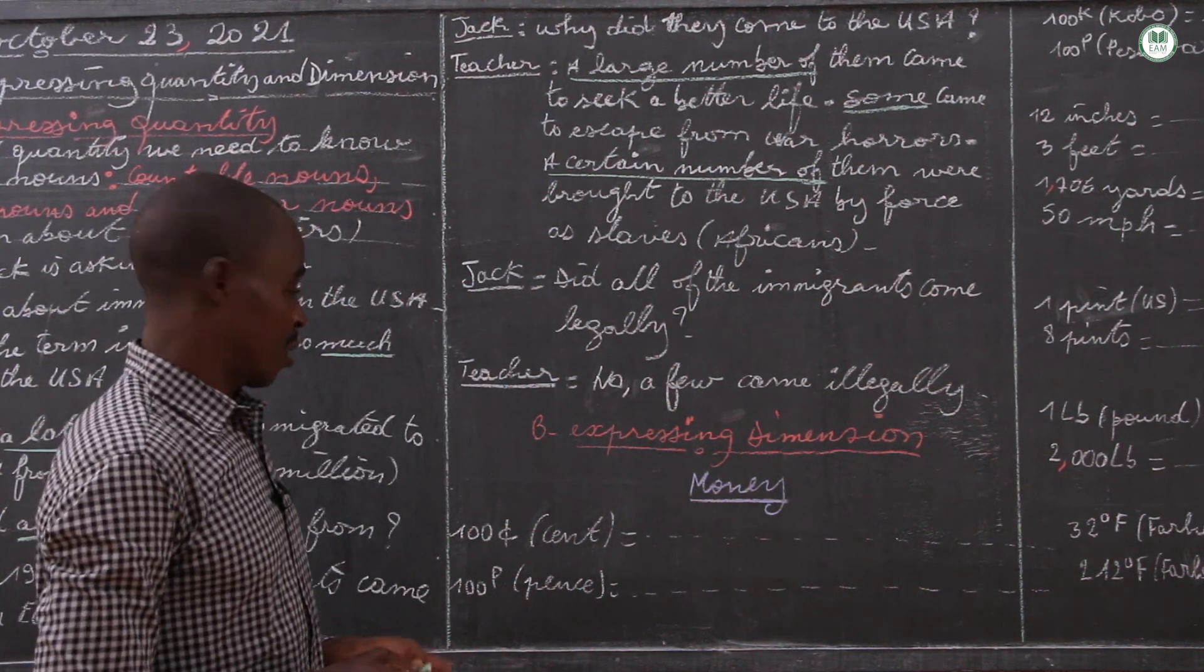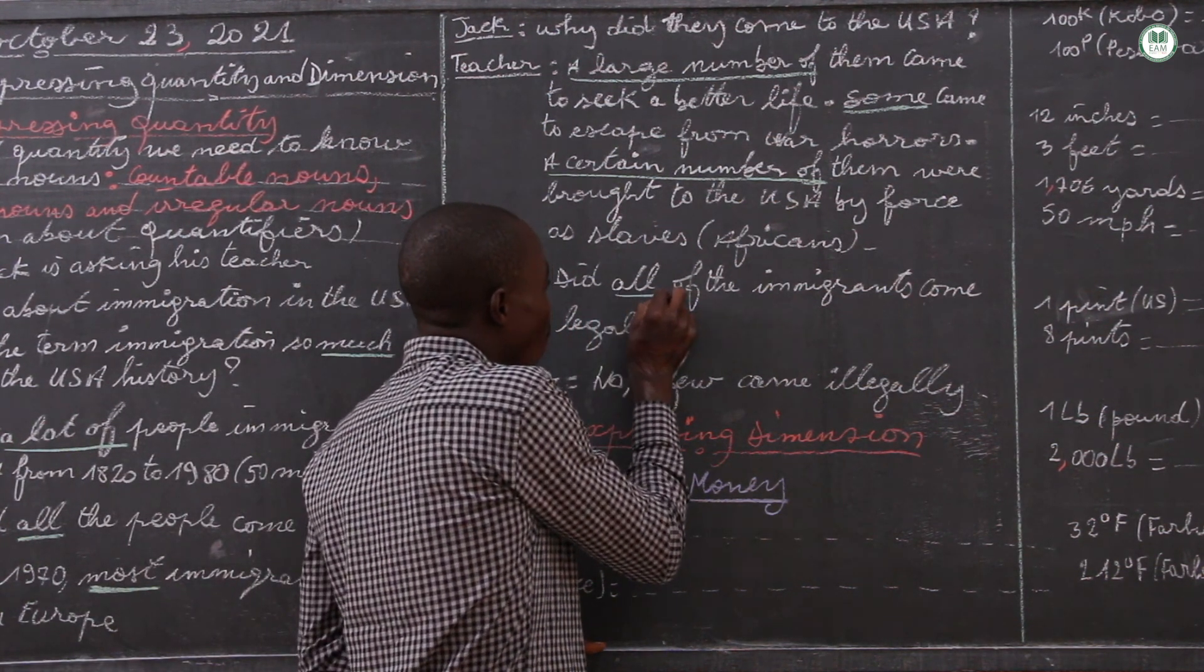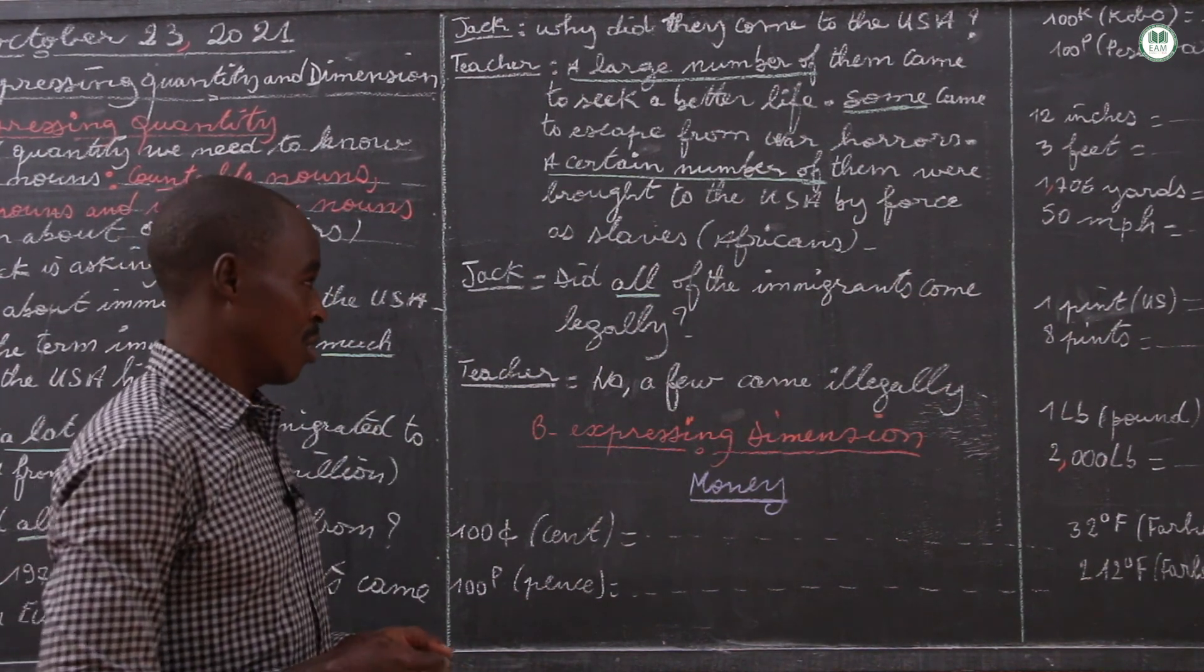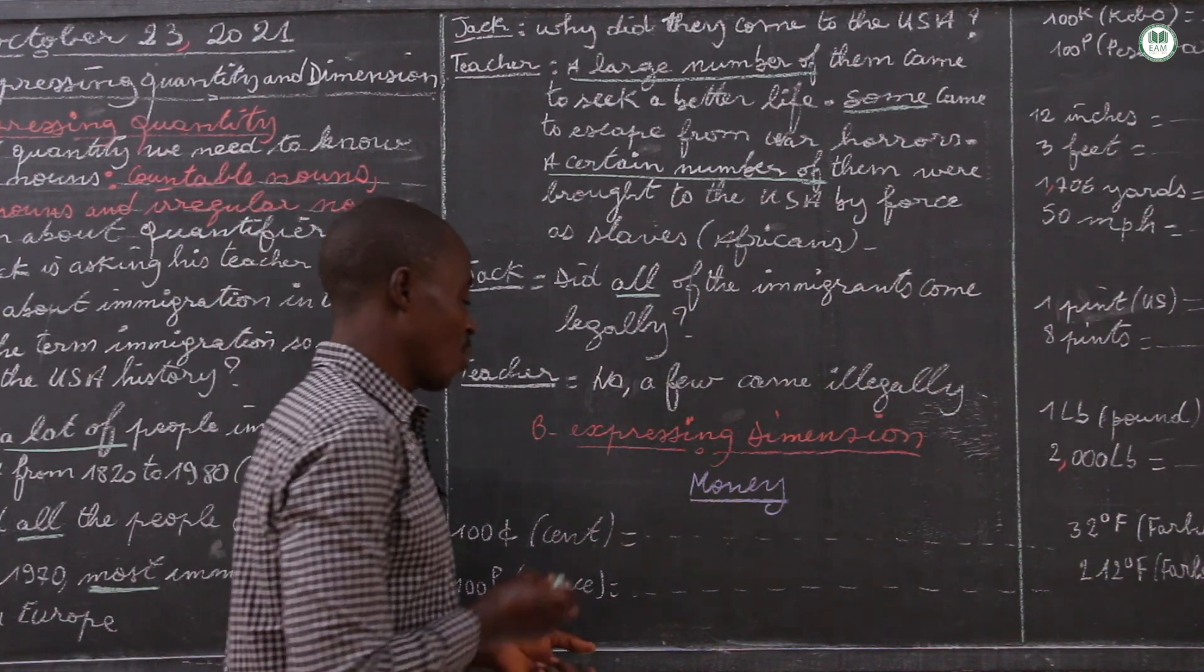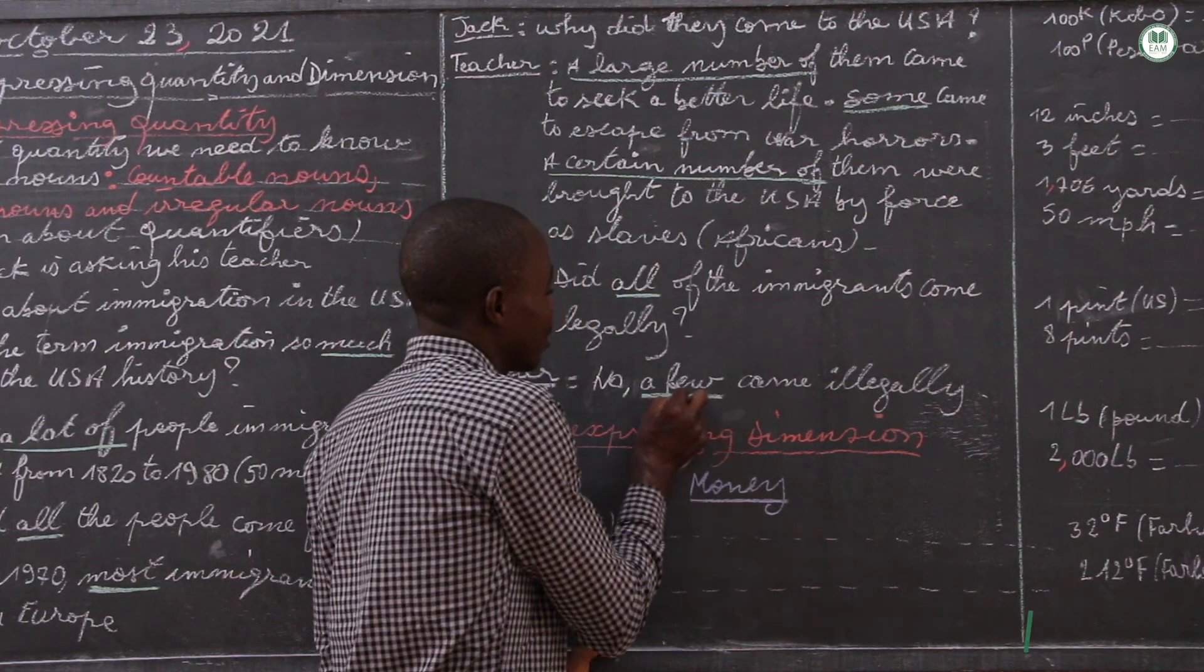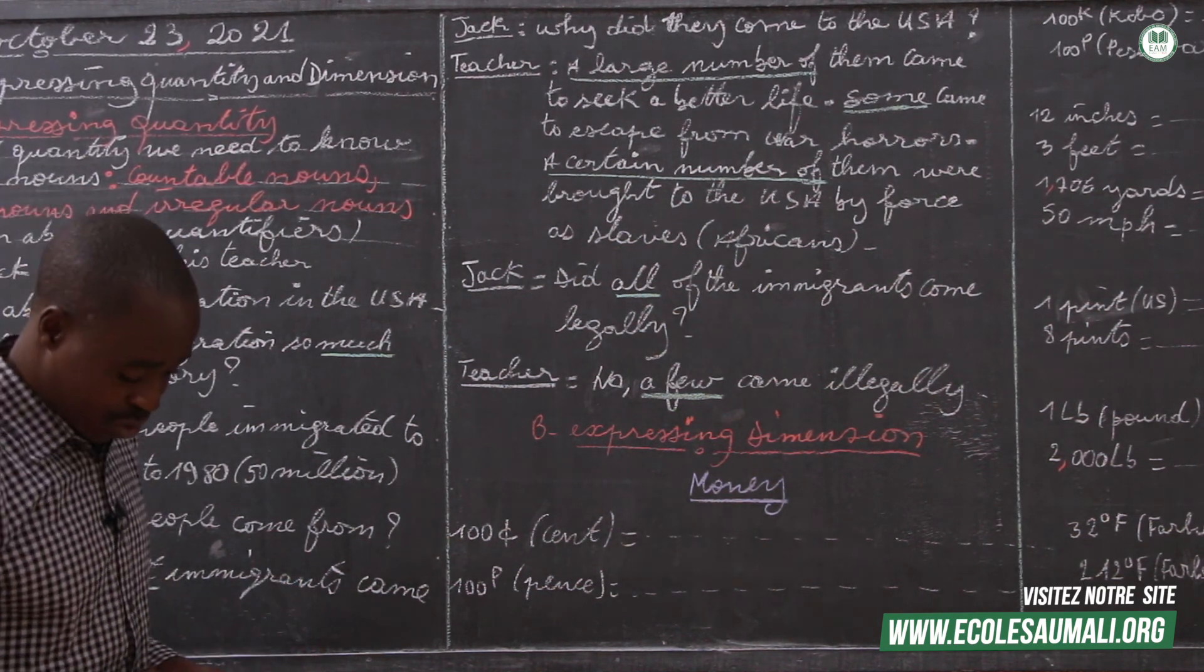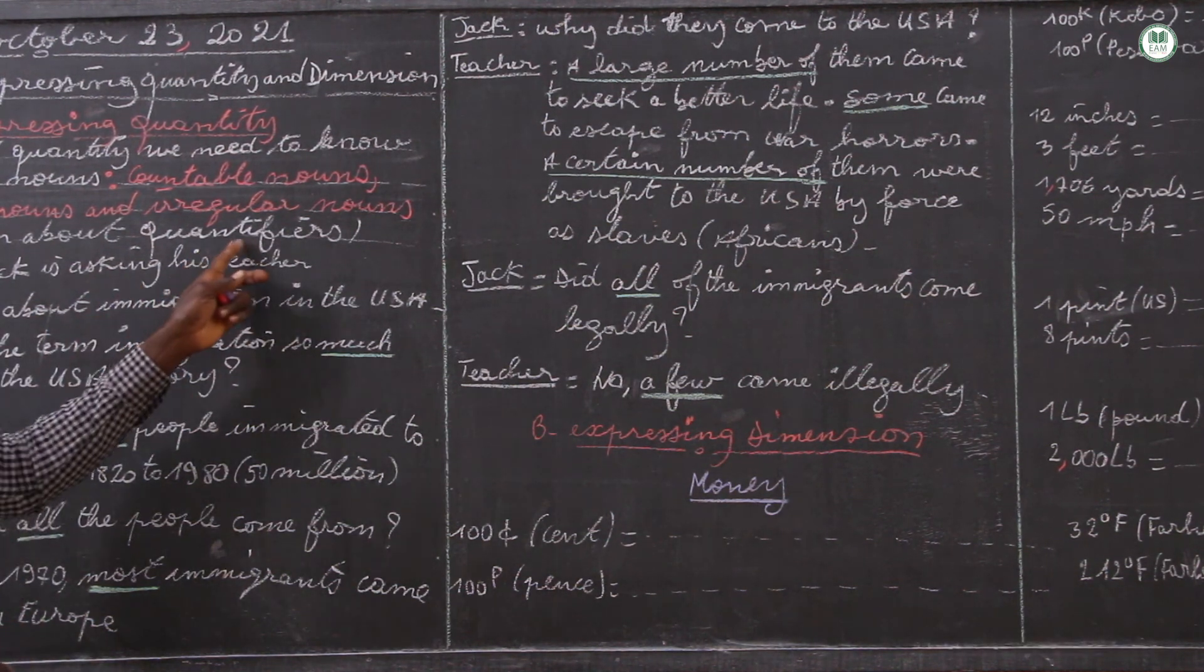And that continues again. Did all of the immigrants - the situation of countable noun - come legally? The teacher is answering: no, a few - a few, so we have countable noun again - a few came illegally.